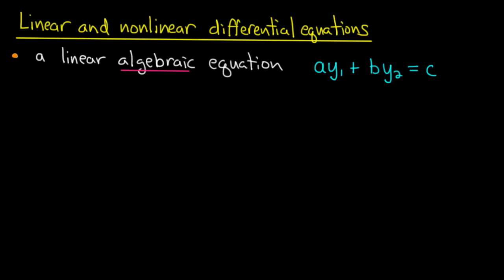First, recall what a linear equation looks like in algebra. It looks like a combination with constant coefficients of some number of unknown variables. So here a, b, and c are some given constants—they're known—and y₁ and y₂ are some unknown variables. If I want to solve the equation, I need to find values of y₁ and y₂ which make the equation true.